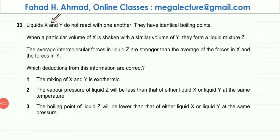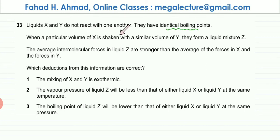The question states that liquids X and Y do not react with one another and they have identical boiling points. When a particular volume of X is shaken with a similar volume of Y they form a liquid mixture Z. The average intermolecular forces in liquid Z are stronger than the average of the forces in X and the forces in Y.